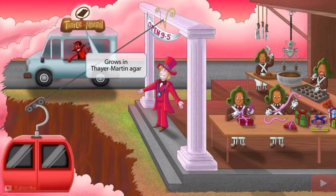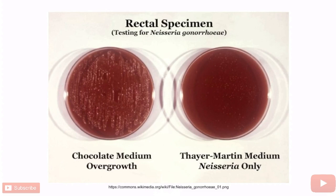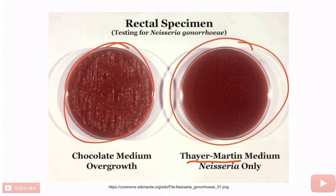We've added a Thayer Martin chocolate food truck to the scene, here to sell as much chocolate as possible to new customers. The Thayer Martin sign should help you remember that Neisseria grows on Thayer Martin agar. Thayer Martin agar looks very similar to chocolate agar because it's a modified version of chocolate agar that also contains selective antimicrobials. The antimicrobials inhibit the growth of other organisms and select for the growth of Neisseria.